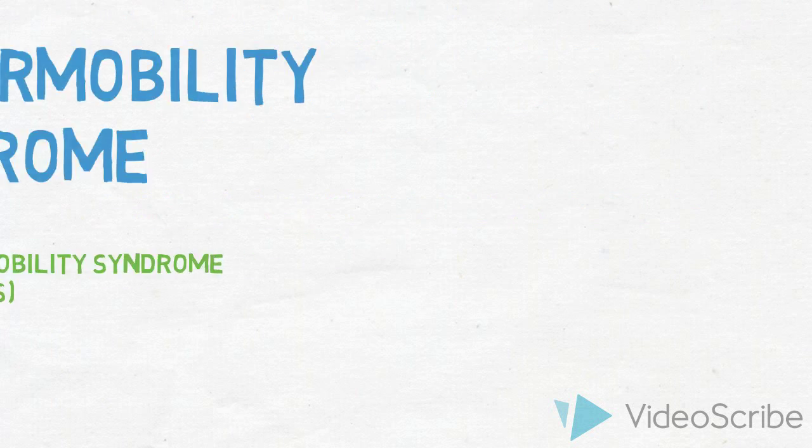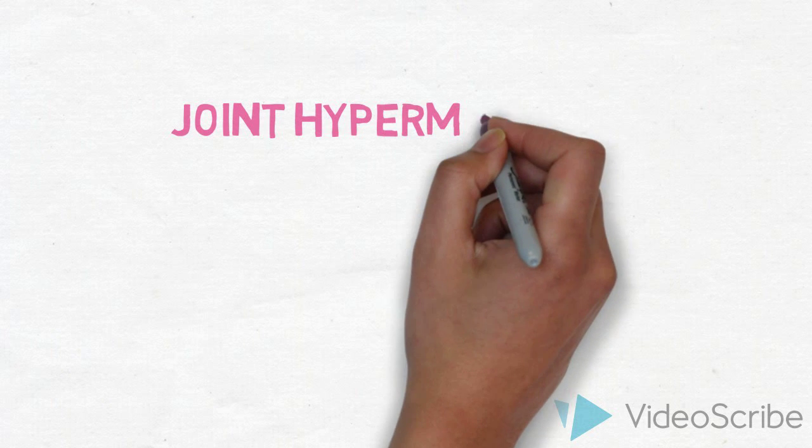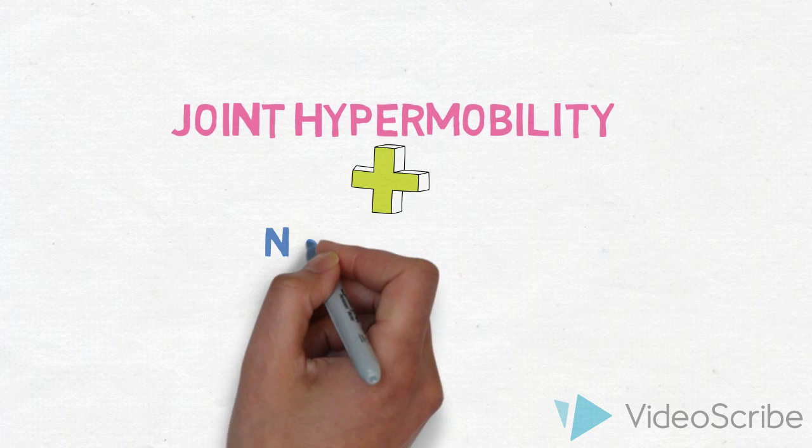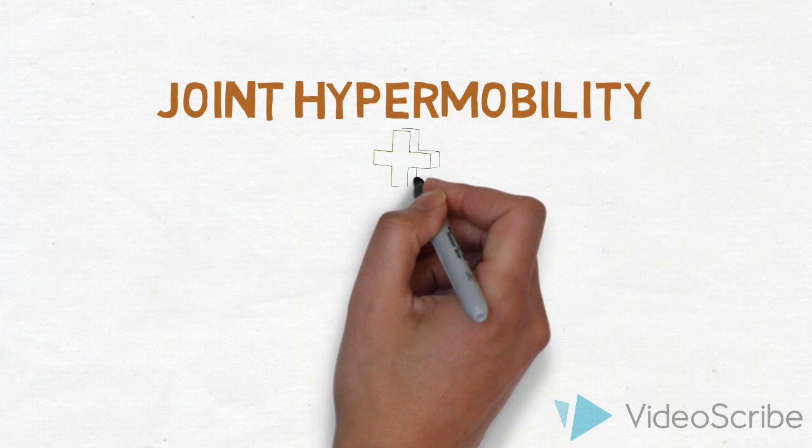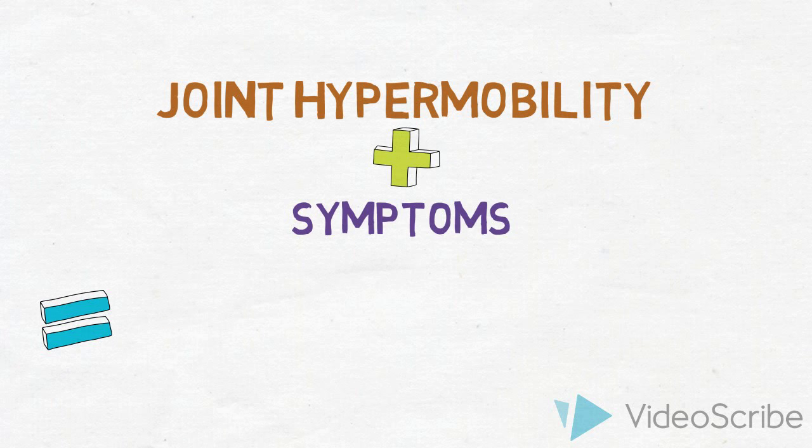So to recap, joint hypermobility plus no symptoms equals okay. Joint hypermobility plus symptoms equals joint hypermobility syndrome.